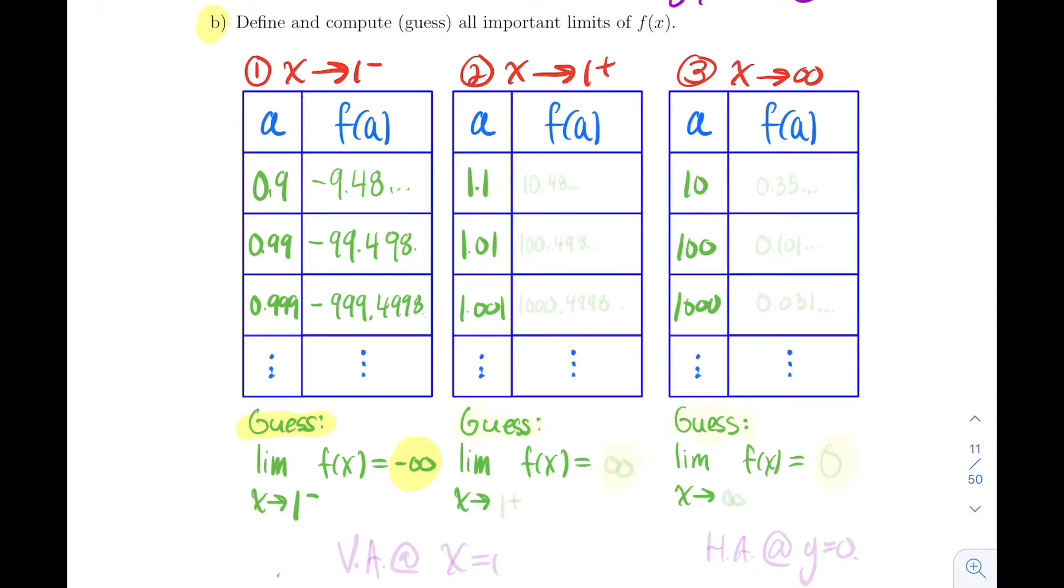What about the second table? For the second table I'm going to evaluate at 1.1, 1.11, and 1.01. You're going to get the following values, so I think there's a 1 missing here: 10.48, 100.49, 1000. Here you see that these numbers are just being multiplied by 10, getting bigger and bigger.